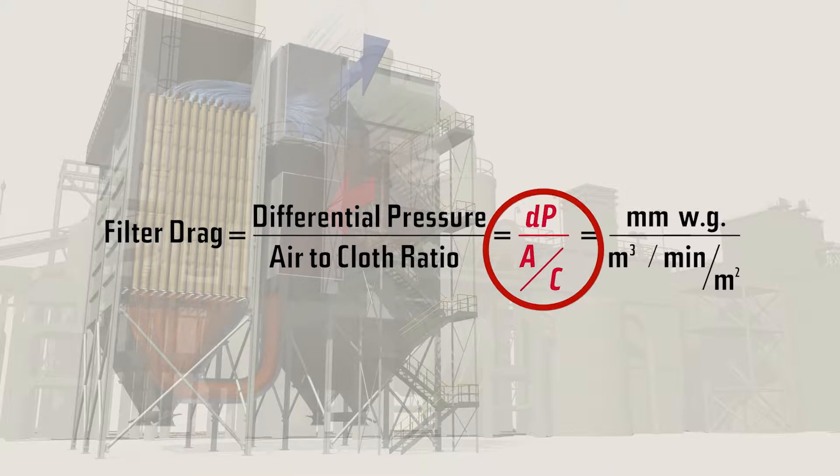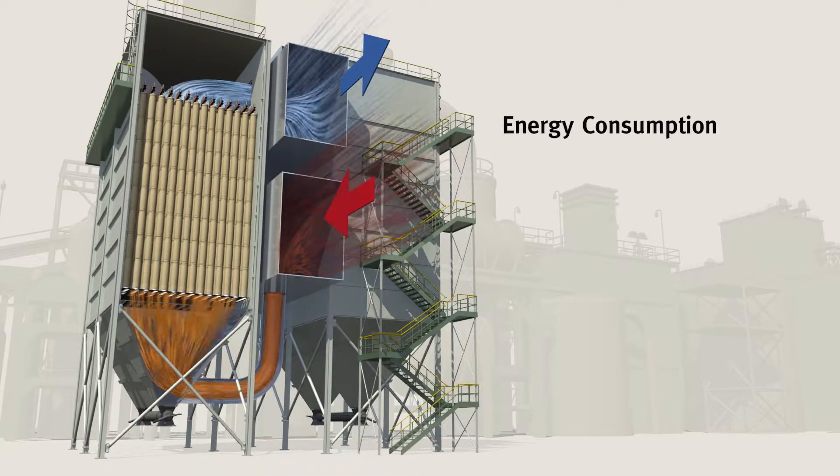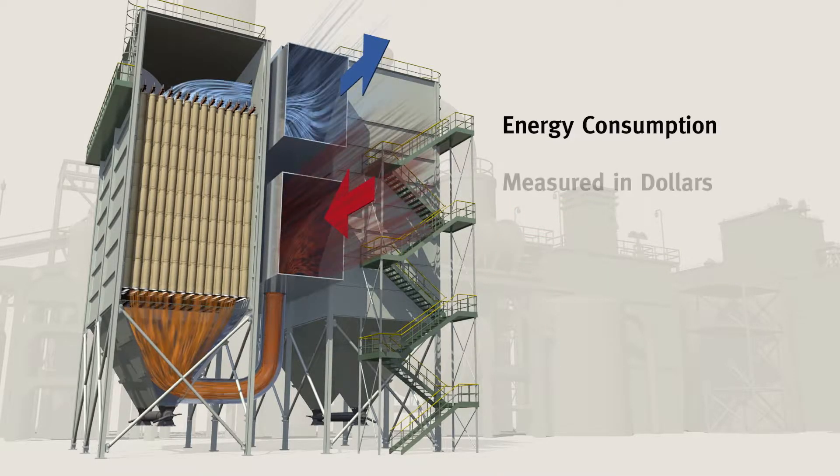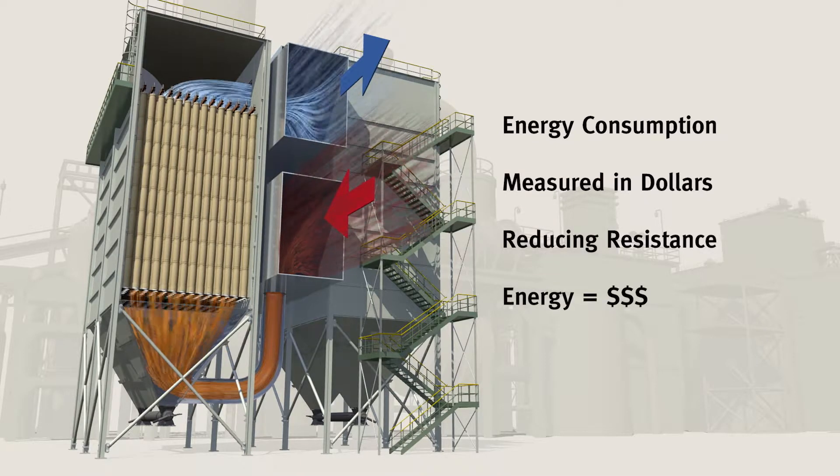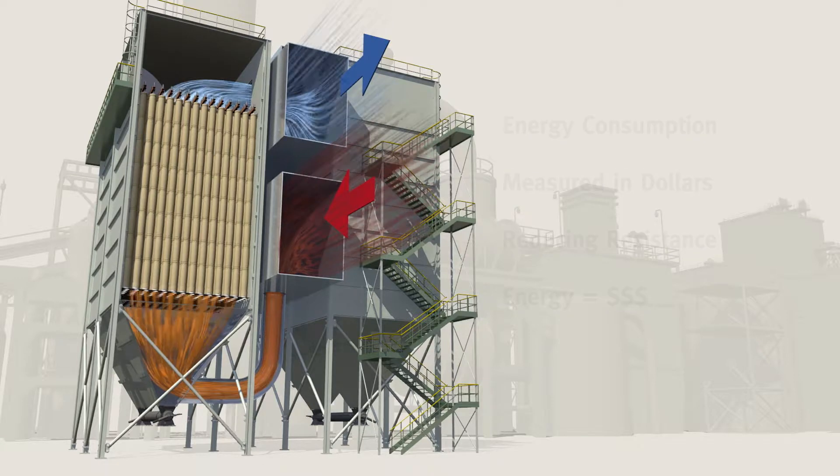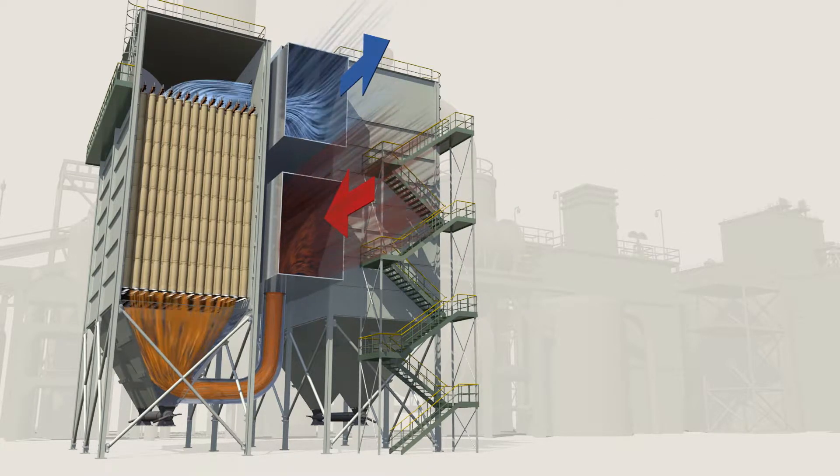Simply put, it is the amount of force or energy it takes to move air through the baghouse. More directly, energy consumption is ultimately measured in dollars, so reducing resistance, saving energy, will save money.